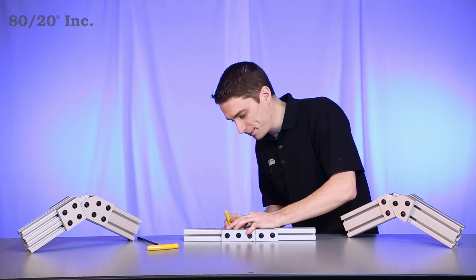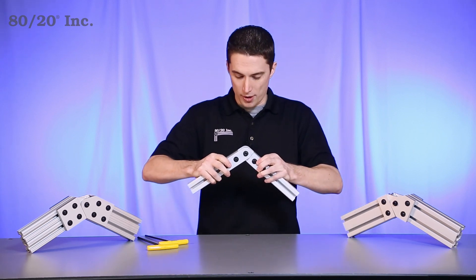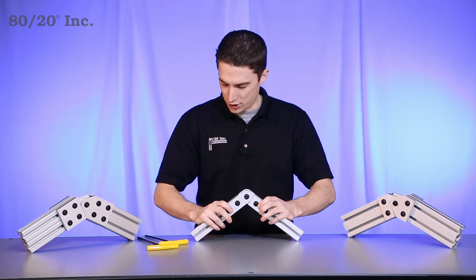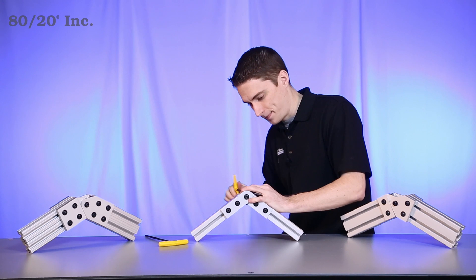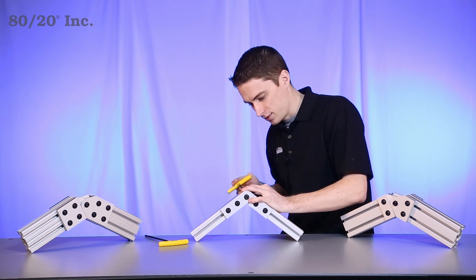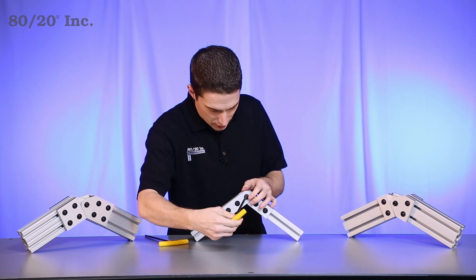Once we've got that secure, the last thing we've got to do is find our desired angle that we want. That looks just about right. We'll take our other wrench and tighten down those center bolts. We'll get that in there for a secure connection.